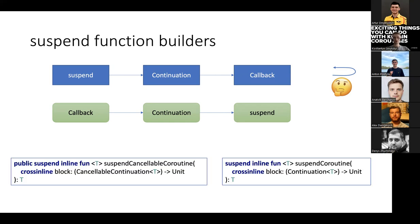You can convert the callback to a continuation, and then the Kotlin compiler will convert your continuation into a suspend function. There are two builders for suspend functions: suspendCancellableCoroutine and suspendCoroutine. I personally recommend using suspendCancellableCoroutine as much as possible because you usually need to perform some cleanup — close streams, cancel your listener, and so on — and suspendCancellableCoroutine provides that possibility. We see some familiar names here: continuation is passed inside the lambda of suspendCoroutine.